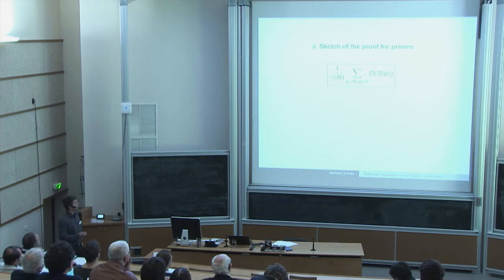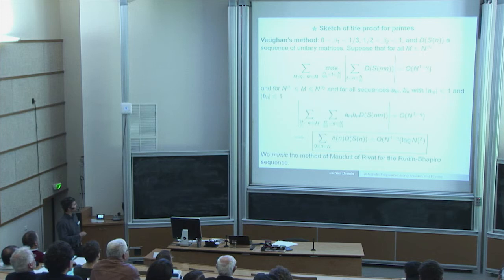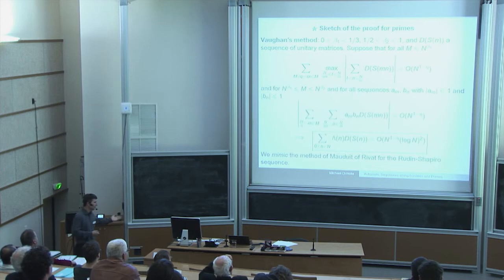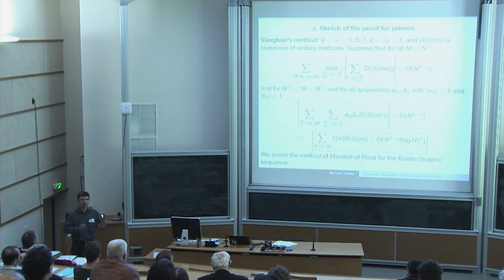For primes, you do a similar procedure using a variation of Vaughan's method — sums of type one and type two — where primes no longer appear directly. This part can be analyzed again using a van der Corput method to cut off digits, and by using the estimates for the Fourier term, you finally get the results. The main ingredients are: the estimate of the Fourier term, van der Corput-type inequalities to cut off digits, and a subtle Fourier analysis.